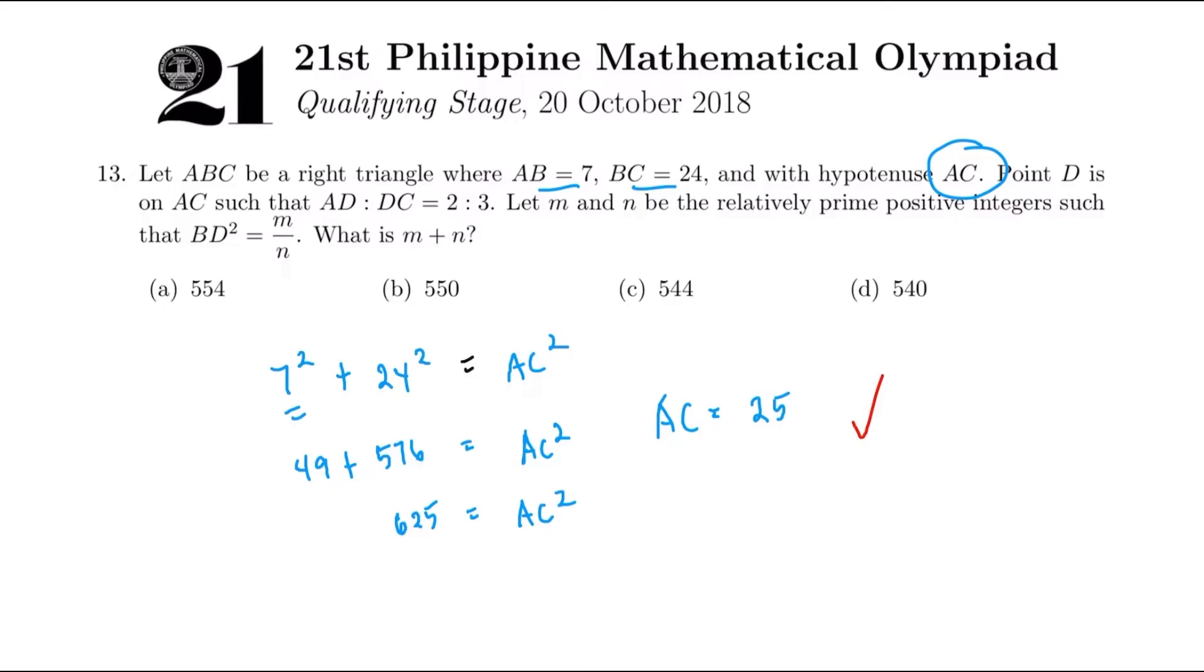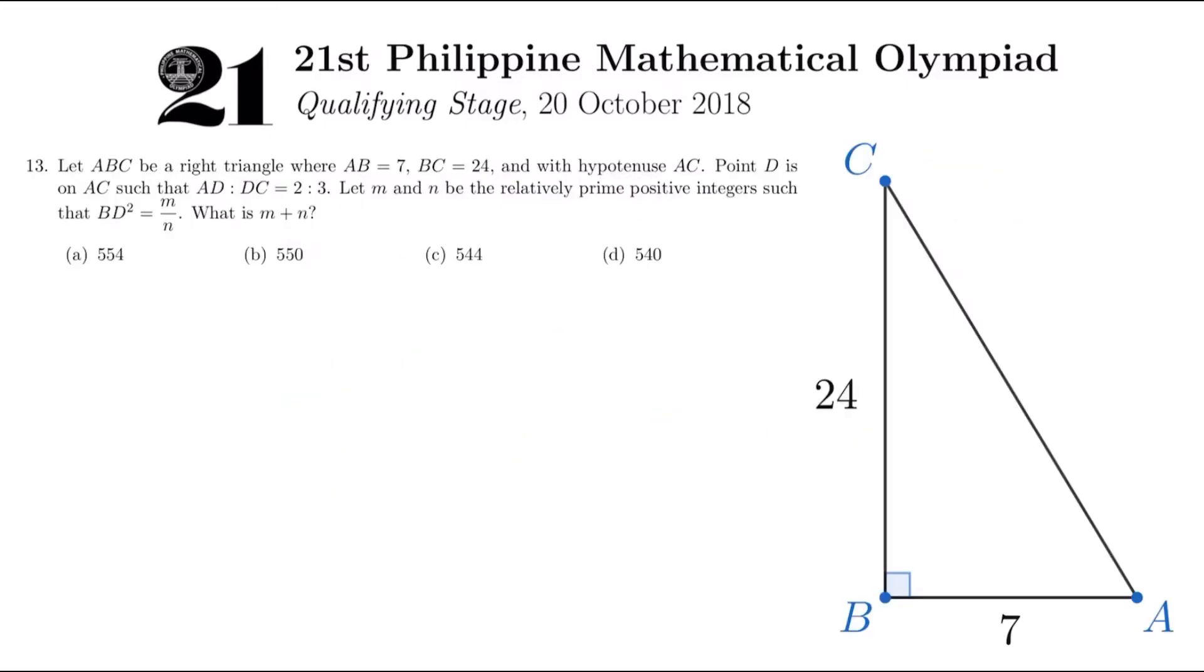Let's try to roughly sketch the figure. So take a look at this figure on the right. We know that AC is 25, but I'm just going to put it right here for now because we have a given. We have a point D on AC such that AD is to DC is 2 is to 3. So D is on the hypotenuse AC. It's more likely AD is to DC. And this will be point D.